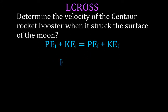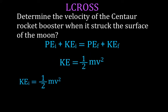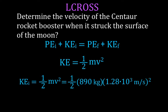Next, the initial kinetic energy is KE = ½mv². That's ½ × 890 kg × (1.28 × 10³ m/s)². Remember to convert 1.28 km/s to meters per second to get joules out. The initial kinetic energy is 7.29 × 10⁸ joules.